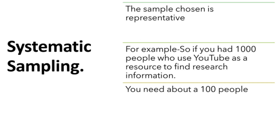The next type of sampling we're looking at is called systematic sampling, and just as the name suggests, it is a systematic way of making sure that the sample chosen again represents the entire population.